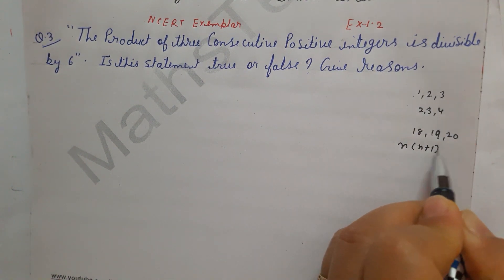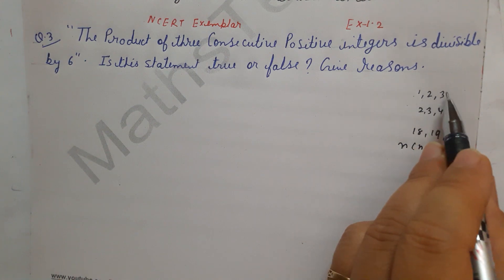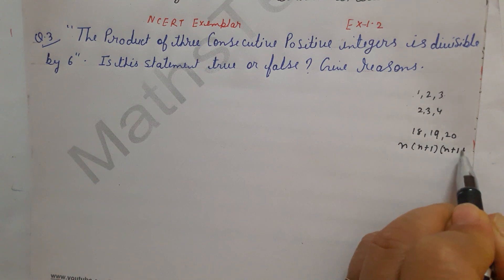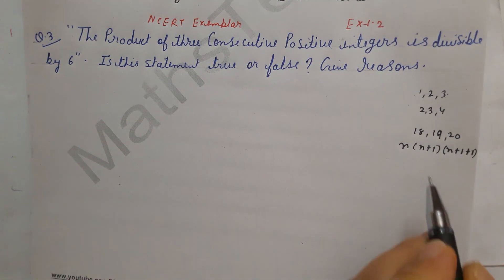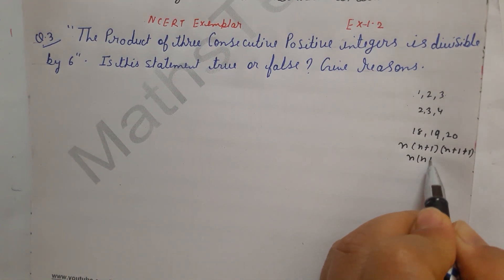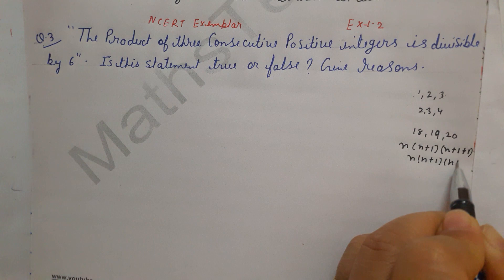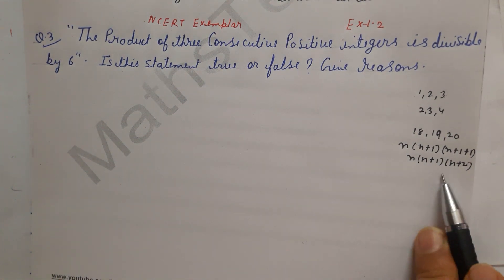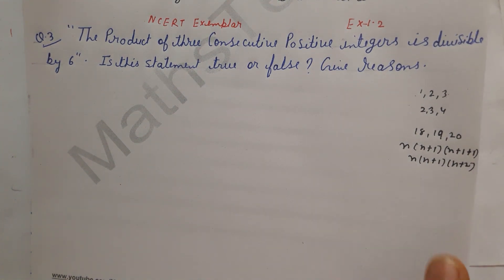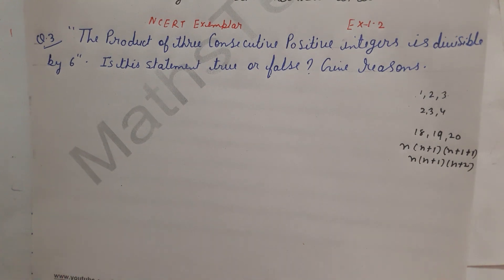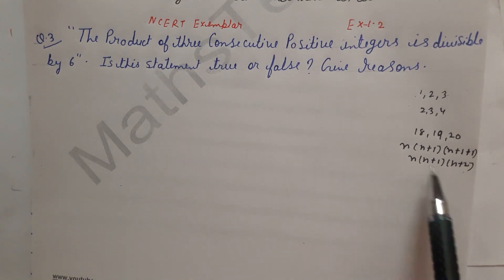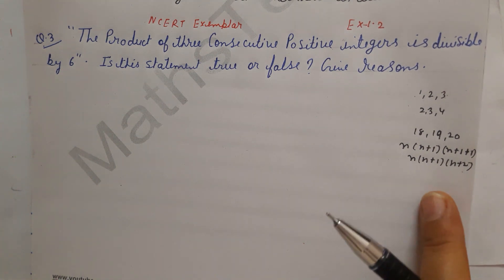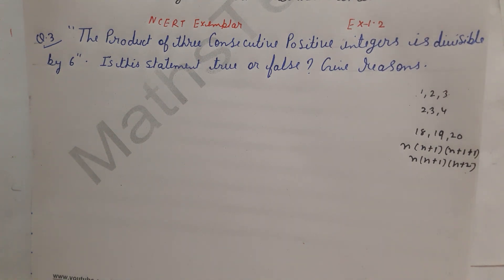The second number is n plus 1 and the third number is n plus 2. So we represent 3 consecutive positive integers as n, n+1, and n+2.